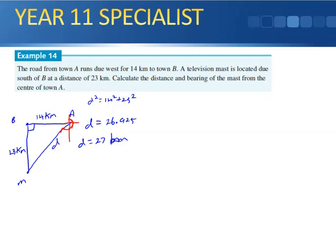For the bearing from town A, we know the western section is 180 degrees, so we find the internal angle using tan(θ) = 14/23, giving θ = arctan(14/23). Adding 180 degrees to that angle gives a true bearing of 211.33 degrees from town A.